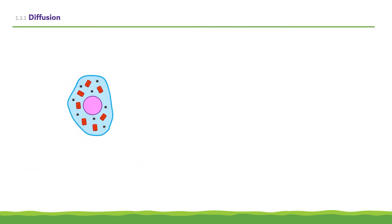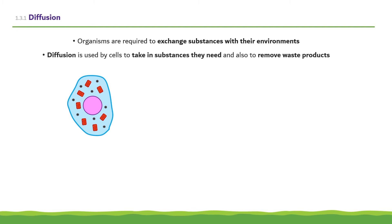Organisms are required to exchange substances with their environments. Diffusion is used by cells to take in substances that they need and also to remove waste products. For example, oxygen and carbon dioxide are transferred between cells and their environment during gas exchange. In humans, urea, a waste product which comes from the breakdown of proteins, diffuses out of cells into the blood plasma to be taken away to the kidneys for removal from the body.